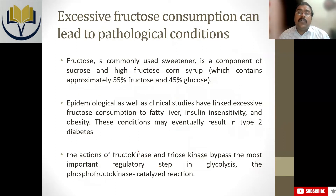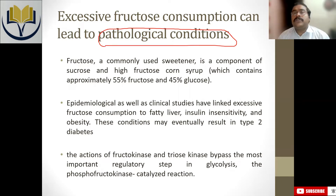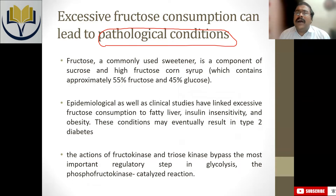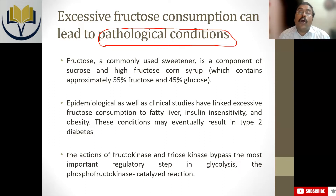But why is excessive consumption of fructose a problem that can lead to pathological conditions? If somebody consumes fructose in an uncontrolled manner, it leads to obesity, fatty liver, insulin insensitivity, and other complications. In case of glucose conversion, there is a checkpoint — the enzyme phosphofructokinase. If we don't require more energy, phosphofructokinase will be inhibited by ATP and glucose will be converted into other components.